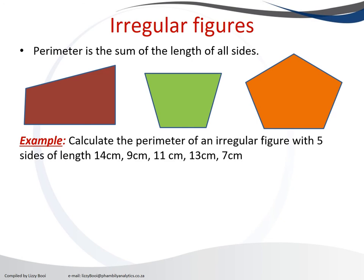How do we calculate this? Remember, for perimeter we add all sides. So calculate the perimeter of an irregular figure with five sides of length 14 cm, 9 cm, 11 cm, 13 cm, and 7 cm.